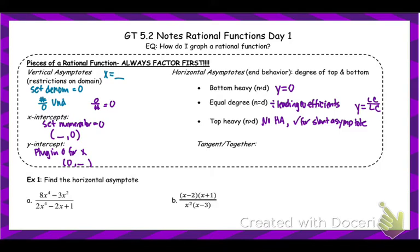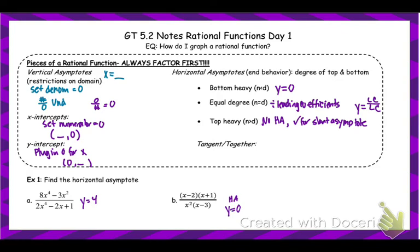Before we talk about tangent and together, let me do a quick example of horizontal asymptotes. For the first function, the biggest exponent on top is 4 and on the bottom is also 4 — they're the same degree, so we divide the leading coefficients. The horizontal asymptote is y equals 4. For the second function in factored form, it's degree 2 on top and degree 3 on the bottom — bottom heavy — so the horizontal asymptote is just y equals 0.